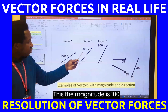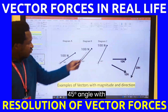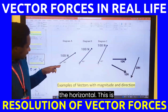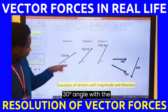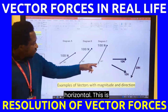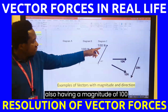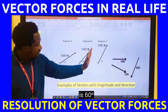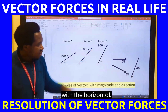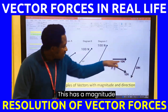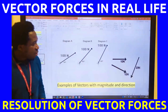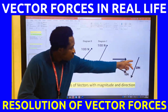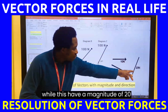The magnitude is 100 Newton and the direction is 45 degrees angle with the horizontal. This is 30 degrees angle with the horizontal. This also has a magnitude of 100 Newton and the direction is 60 degrees with the horizontal. This has a magnitude of 10 Newton, this has a magnitude of 15 Newton, while these have a magnitude of 20 Newton.